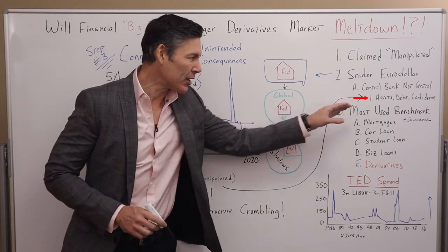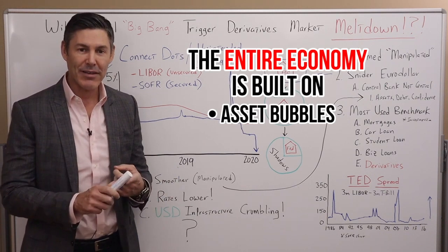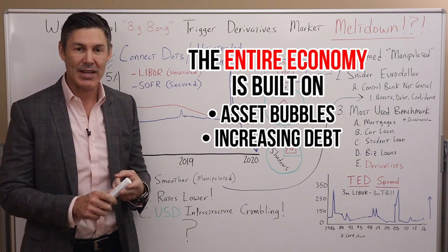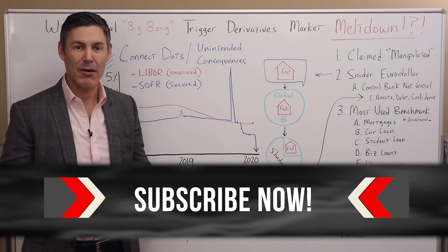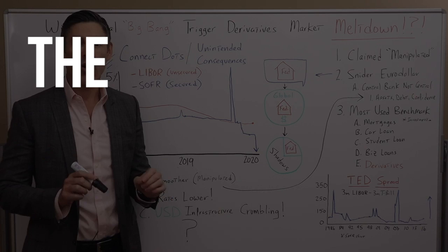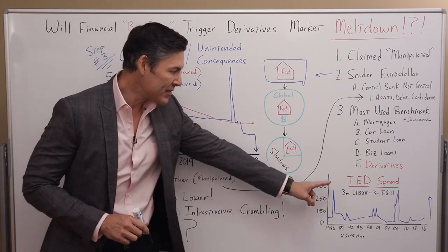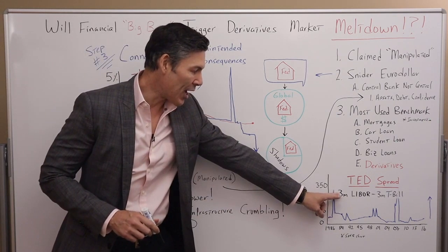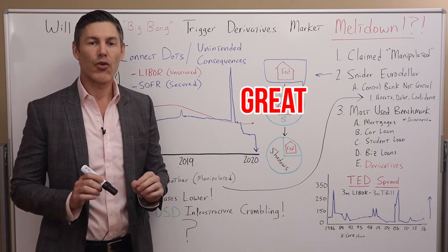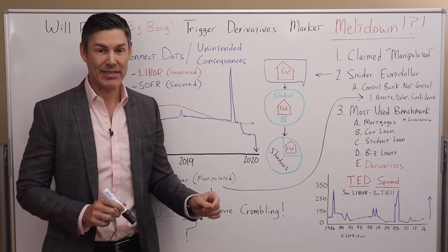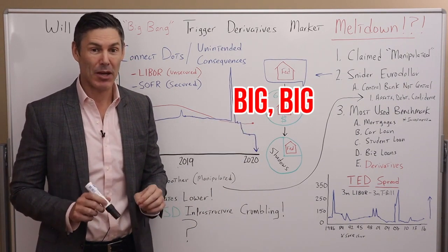It goes back to confidence. The entire economy is built on asset bubbles, an increasing amount of debt, and confidence. If the general public and the markets lose confidence in the Fed's ability to manage the system, the whole house of cards comes crashing down. Let's check out another chart — this is the TED spread: the three-month LIBOR rate minus the three-month interest rate for T-bills. This has been a great indicator in the past that the banking system has big, big problems.